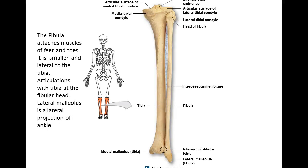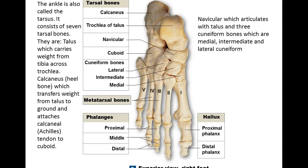Here is the fibula and the interosseous membrane in a posterior view, showing the foot and ankle. The ankle is also called the tarsus, made up of seven tarsal bones. One of those seven tarsal bones is called the talus. The word 'tarsus' is not used that much — most people just call it the ankle — but your book uses it.